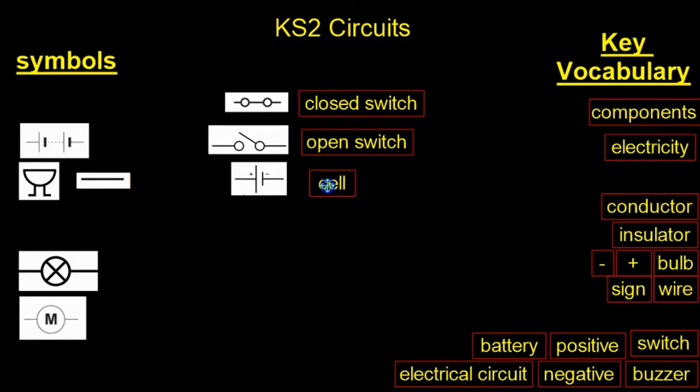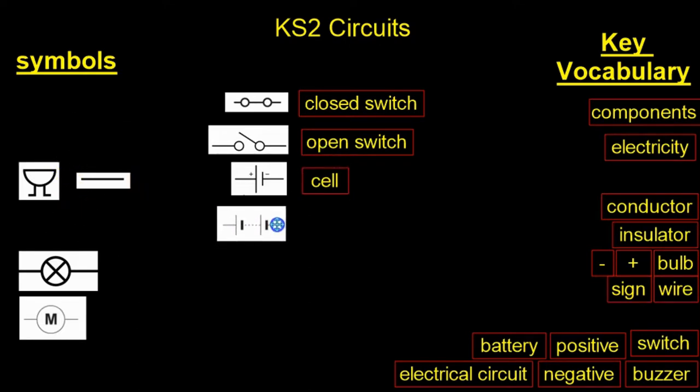When you have more than one cell together, it makes up a battery. Again, the long thin line is the positive, and the short darker line is the negative. Here is the word battery.